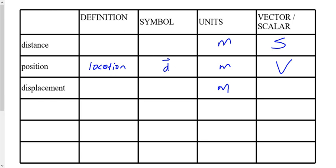What's the symbol for distance? That delta — that upside-down triangle, the Greek letter delta — what does it mean? It means change. When we're talking about a distance traveled, we're normally talking about a change, because if I've moved, it's changed. Where I am has changed, so I need that delta in there.